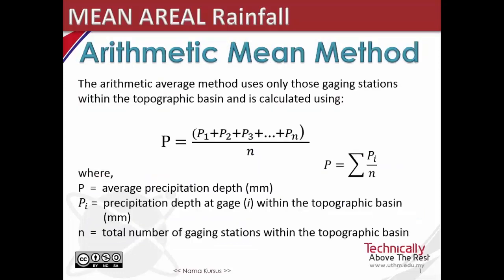The arithmetic average method uses only those gauging stations within the topographic basin and is calculated using these equations. P equals the summation of Pi over N, where Pi is the precipitation depth at gauge i within the topographic basin, and N is the total number of gauging stations.